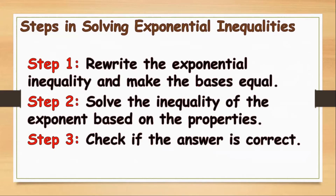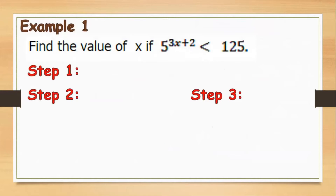Step 1: rewrite and make the base equal. Step 2: solve the inequality of the exponent based on the properties, then check if the answer is correct. Find the value of x if 5^(3x+2) < 125. First, we have to make the base equal — 125 is 5^3.